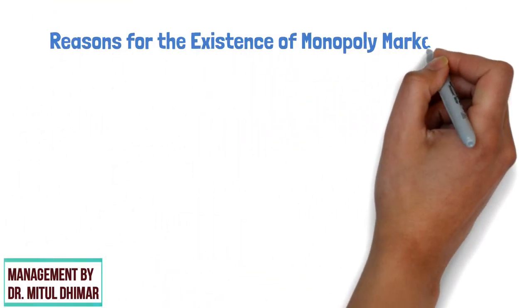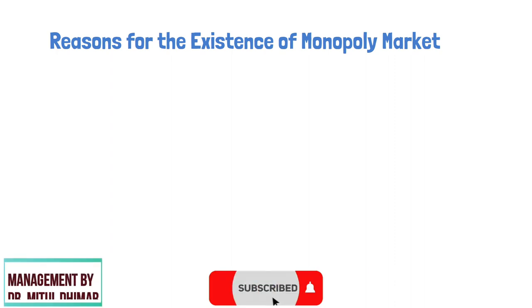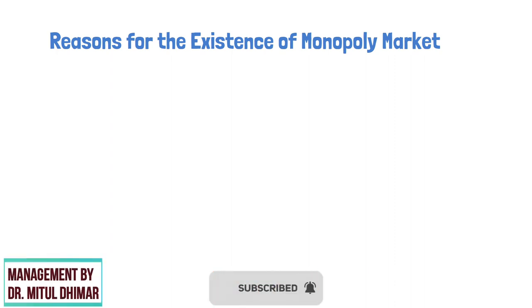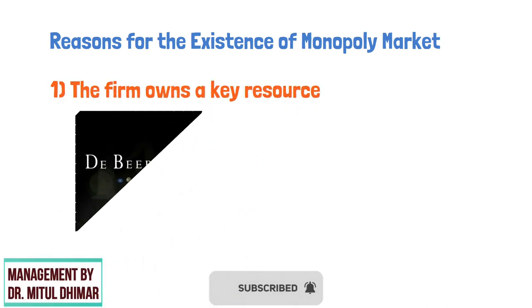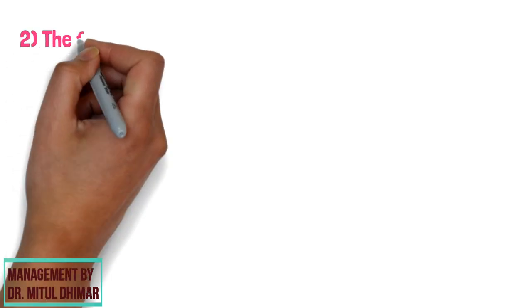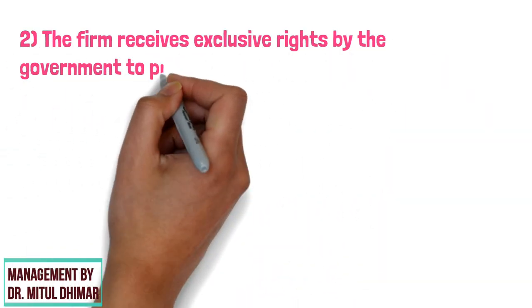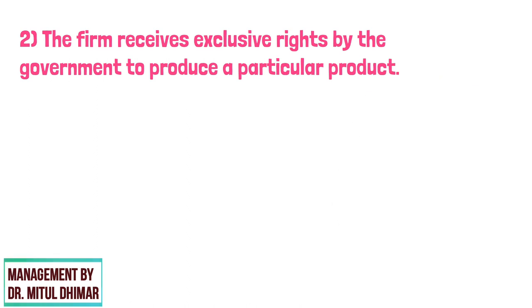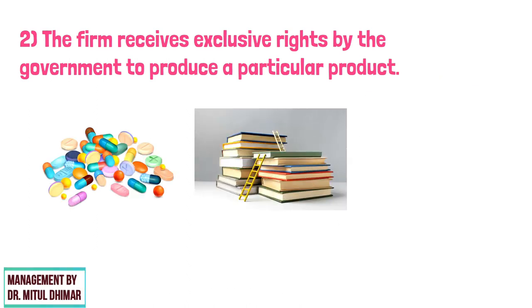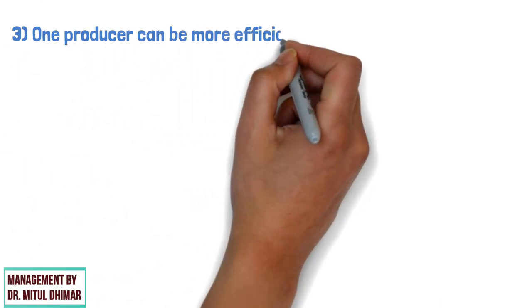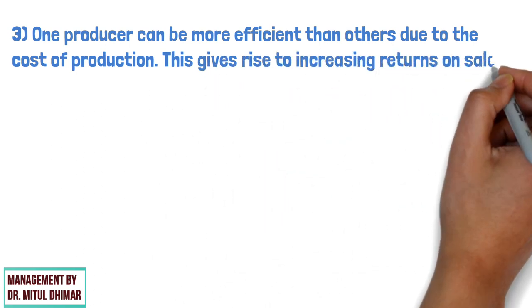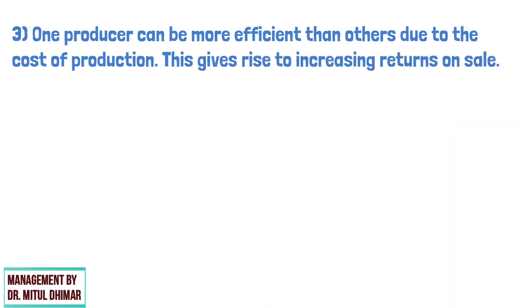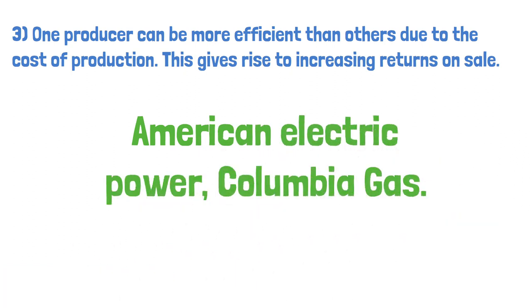Reasons for the Existence of a Monopoly Market: monopolies arise in the market due to three reasons. First, the firm owns a key resource, for example De Beers and diamonds. Second, the firm receives exclusive rights by the government to produce a particular product, such as a patent on new drugs, copyright for books or software, etc. Third, one producer can be more efficient than others due to the cost of production, which gives rise to increasing returns on sale. Few examples are American Electric Power and Columbia Gas.